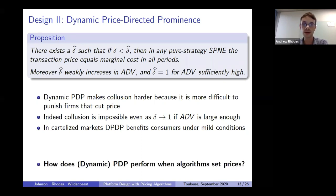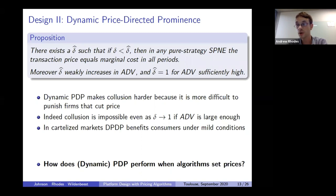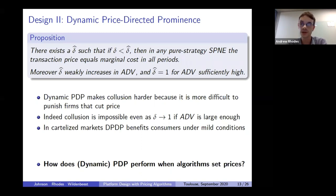To sum up, we've looked at two simple interventions. The first could work well in competitive markets but less well in cartelized markets. The second — dynamic PDP — seeks to reward firms with low prices not just today but in the future. It has very similar properties to PDP in competitive markets, but can work very well in cartelized markets.